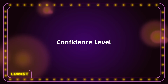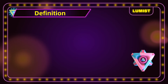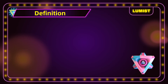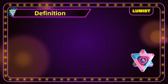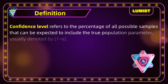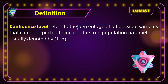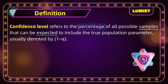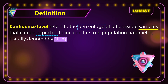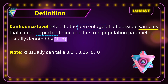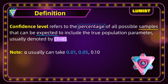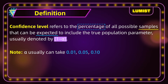But what if the margin of error is not given in the question — how can we get a confidence interval of an estimator? The way to find a confidence interval would be different in different situations, which we will be looking at in our next video. Before we finish, let's look at the last key term: the confidence level. A confidence level refers to the percentage of all possible samples that can be expected to include the true population parameter, usually denoted by 1 minus alpha. Note that alpha usually takes on values of 0.01, 0.05, or 0.10.